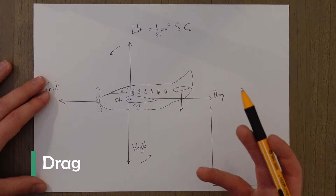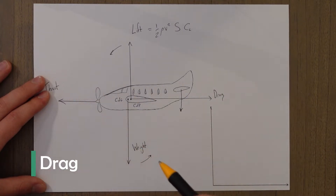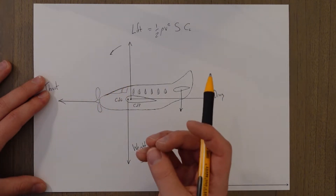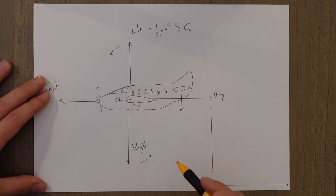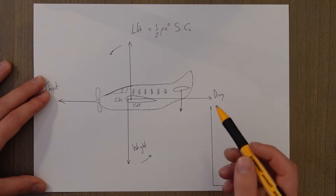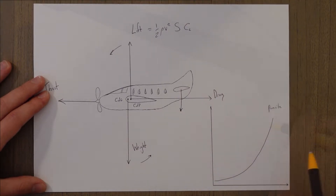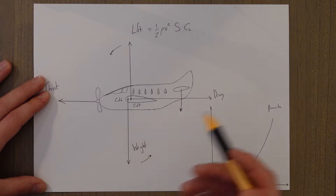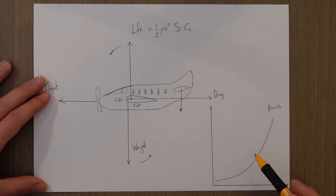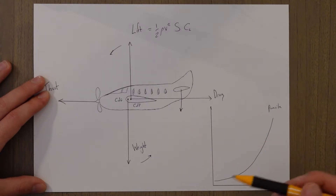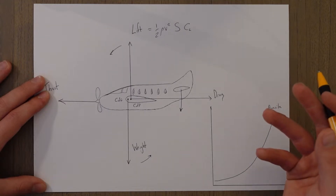Drag comes in two main forms: we get parasite and induced. Parasite drag comes from the shape of the aircraft's frontal surfaces, the surface texture, and any contamination that may be on the aircraft's skin. It is proportional to the aircraft's speed squared, so at high speeds it creates a lot of drag — which is why fast jets are all streamlined and smooth. Think of the very pointy nose of the Concorde. The amount of parasite drag can be given a coefficient which we call the coefficient of drag parasitic.